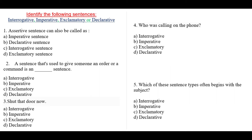Assalamualaikum. Today we are going to start a quiz on types of sentences — identify the following sentences as interrogative, imperative, exclamatory, or declarative. Question number one: an assertive sentence can also be called as — a) imperative sentence, b) declarative sentence, c) interrogative sentence, d) exclamatory sentence.